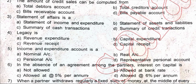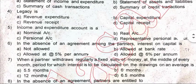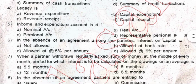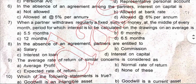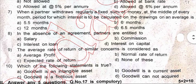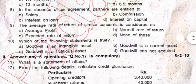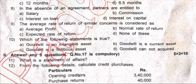In the absence of an agreement among partners, interest on capital: when a partner withdraws regularly a fixed sum of money at the middle of every month, the period for which interest is to be calculated on drawings on average is. In the absence of an agreement, partners are entitled to the average rate of return of similar concern. Which of the following statement is true?